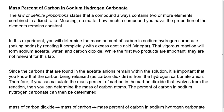Since the carbons found in the acetate anions remain within the solution you're going to make, it's important to know that the carbon being released as carbon dioxide is from the hydrogen carbonate anion, or the bicarbonate anion. Therefore, you can calculate the mass percent of carbon in the carbon dioxide that evolves from the reaction.